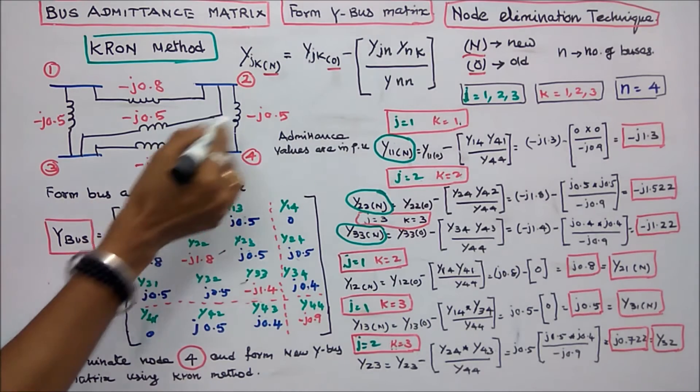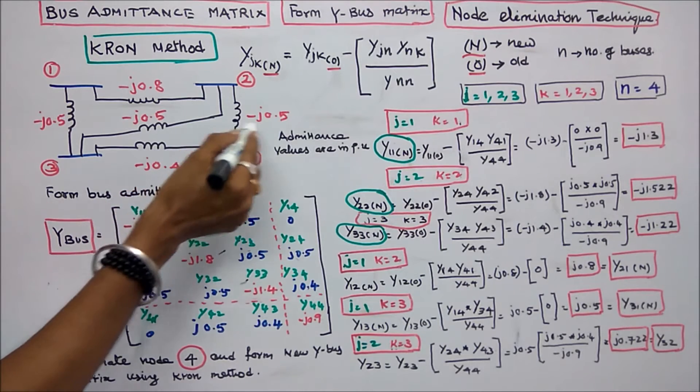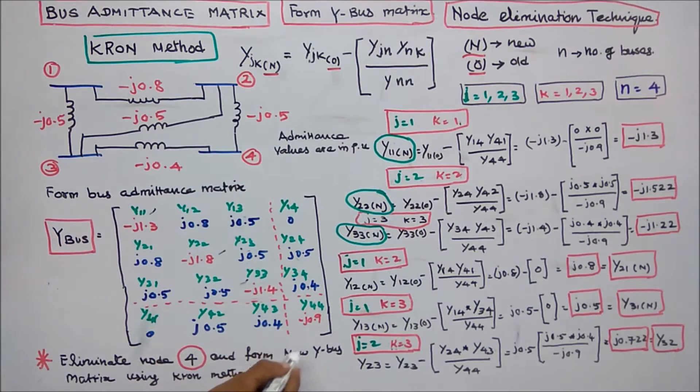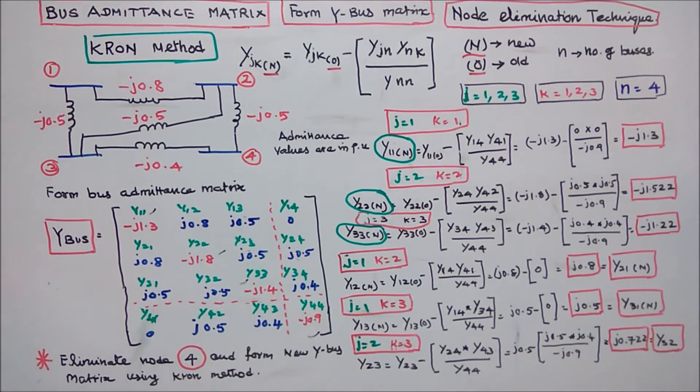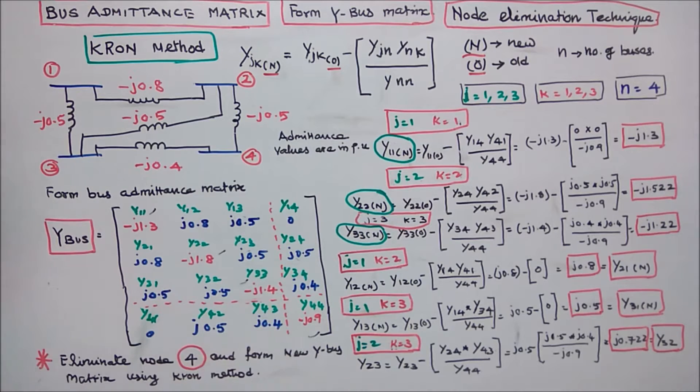For Y44, two lines are connected to bus 4: minus j0.4 and minus j0.5, giving Y44 equal to minus j0.9. The diagonal elements are now complete.